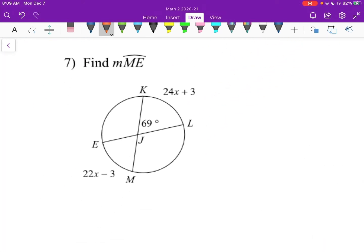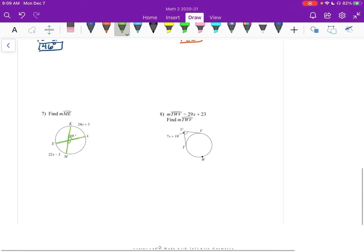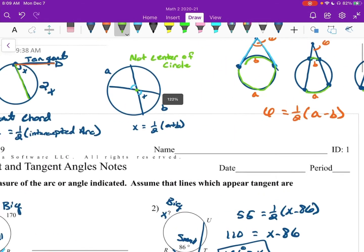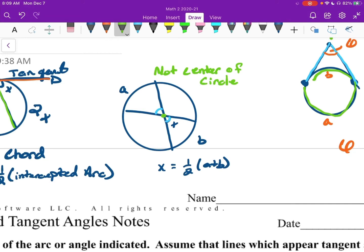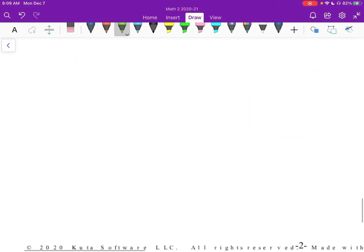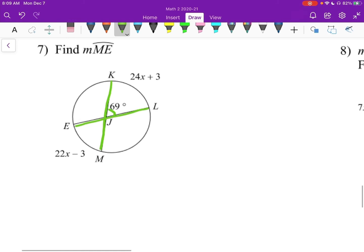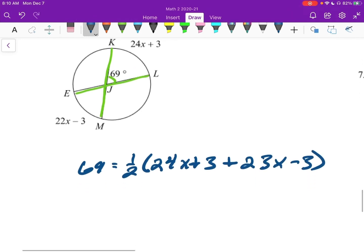All right. Number 7. Ah, so here we have two chords, and we have an angle inside there. So let's look at our formula real quick. It's this middle one. So X, our angle, is one half the arcs added together. Right? So you see, like, the average of the arcs. So let's go back down here. So my angle, 69 equals one half, and I'll do the 24X first, 24X plus 3 plus 23X minus 3.